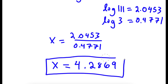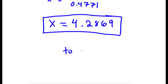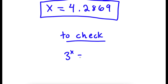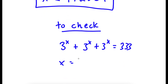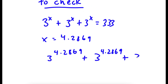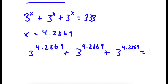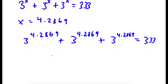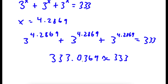So this is my answer. Now to check: 3 to the power of 4.2869 plus 3 to the power of 4.2869 plus 3 to the power of 4.2869 is equal to 333. If you add up all these, you get 333.0369, which is approximately equal to 333. So this is correct.